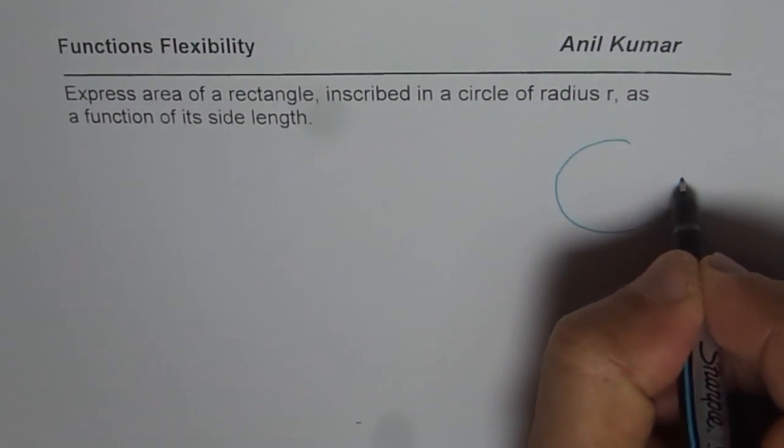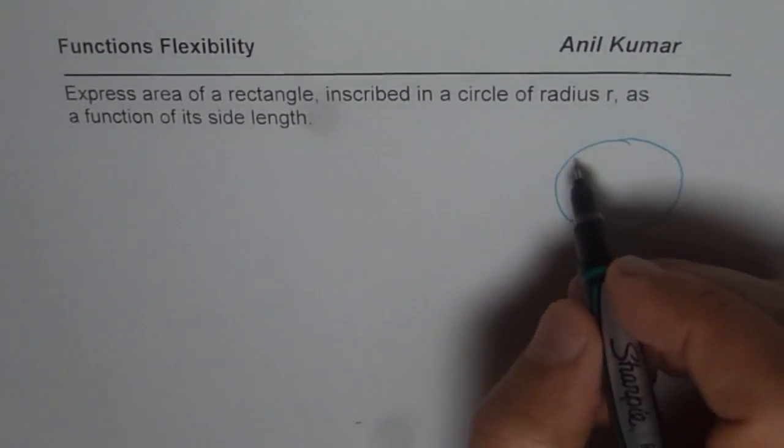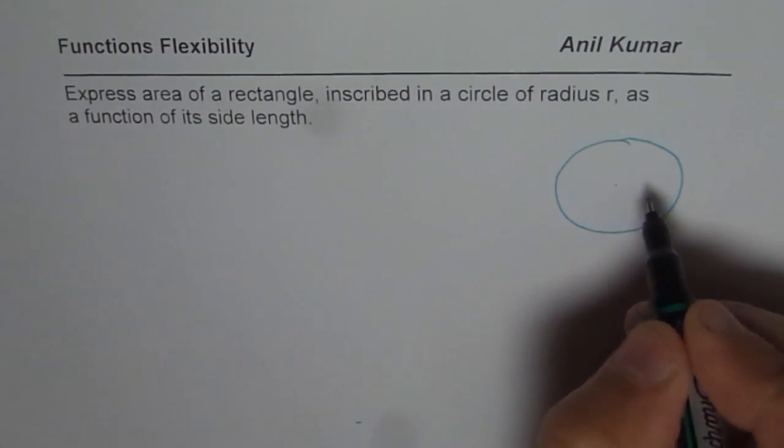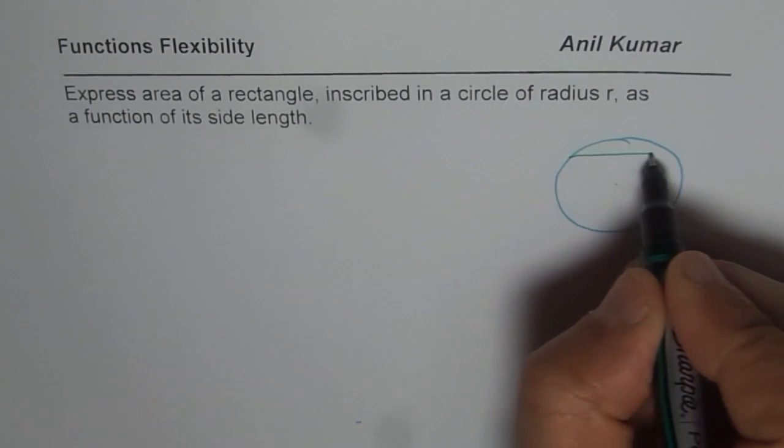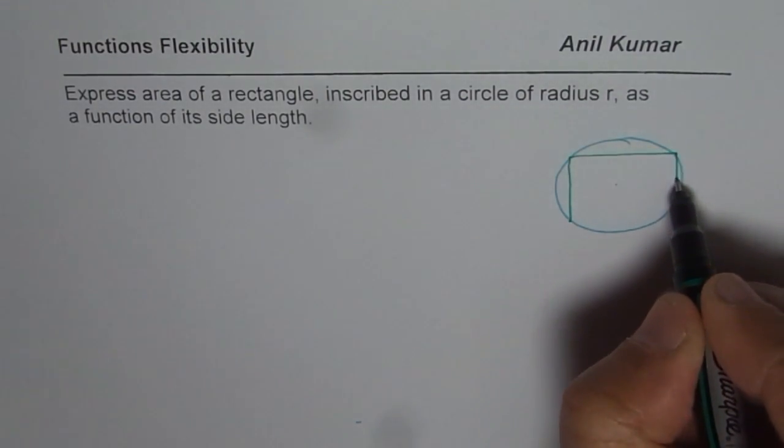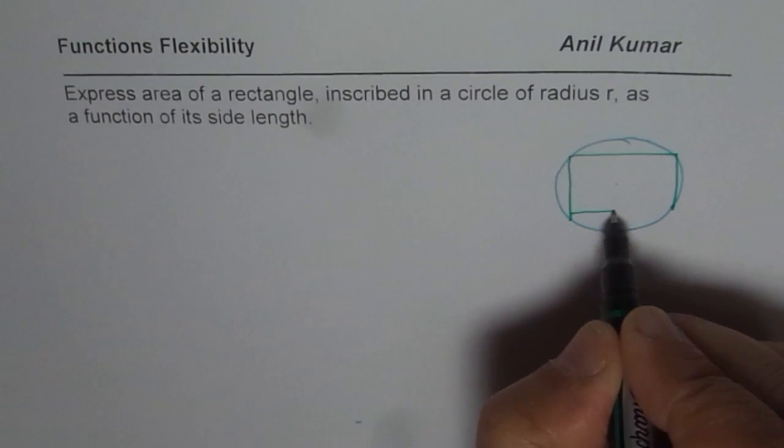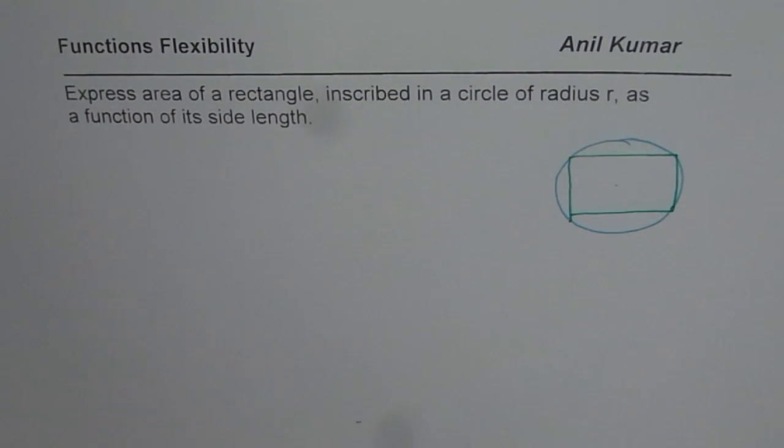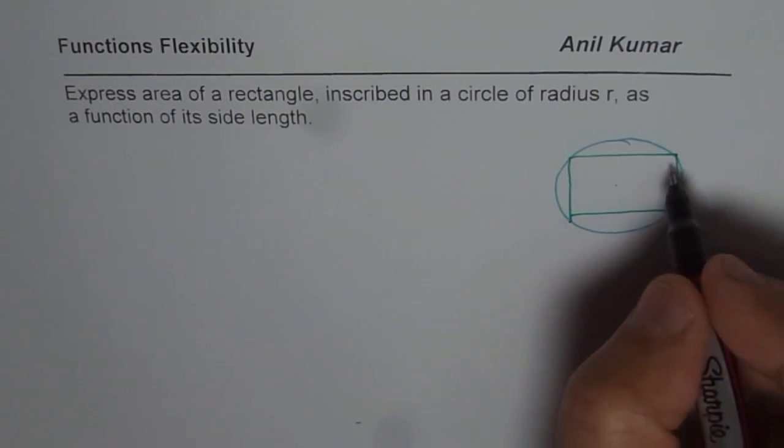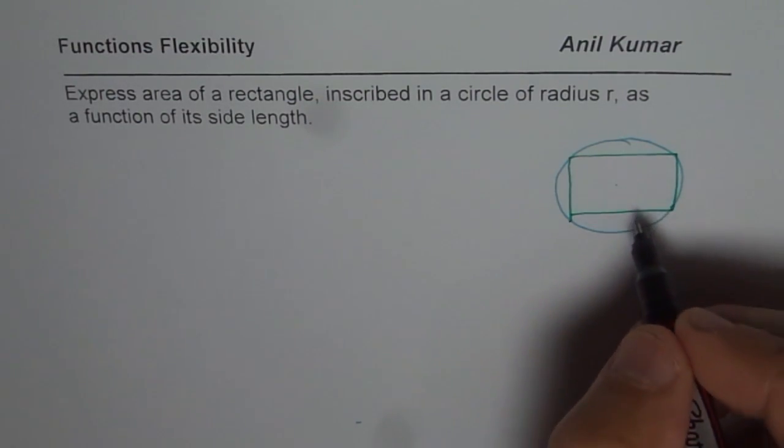Here is a simple circle for you and inside the circle we want to inscribe a rectangle. So let us say that's the center. I'm making the diagram to the best of my abilities. Here is my rectangle. Let us say this is the rectangle inscribed in a circle. So when we say inscribed that means all the four vertices are on the circle.